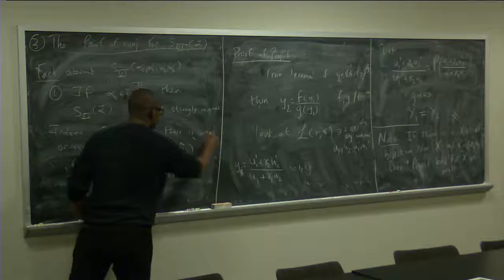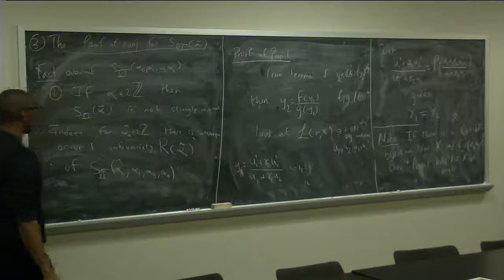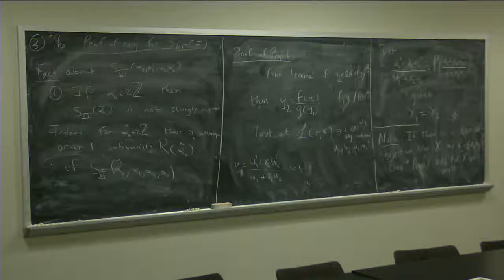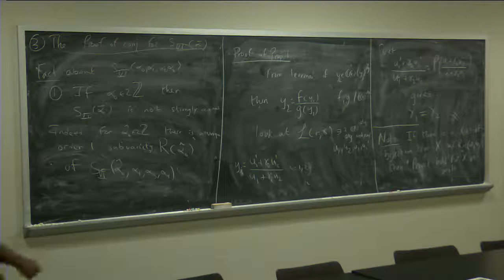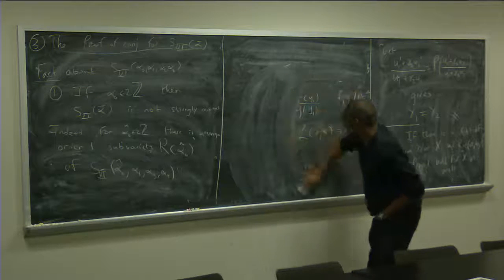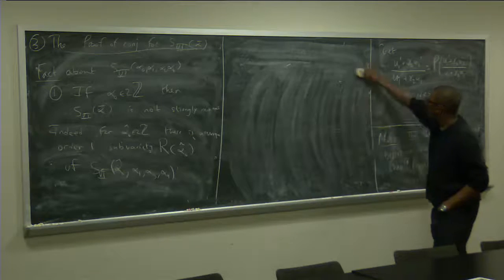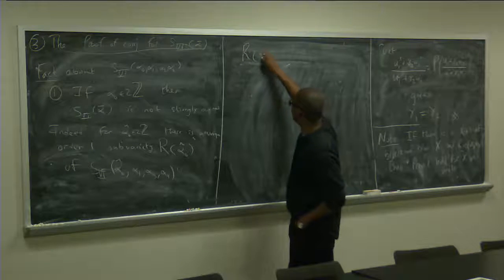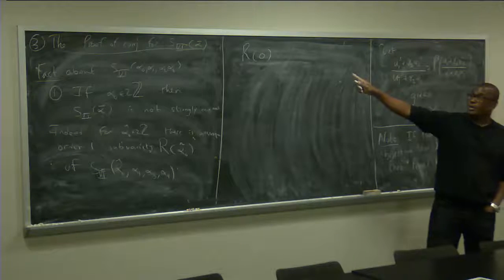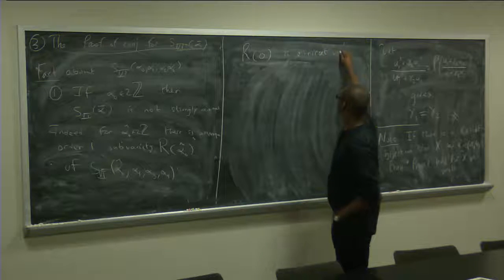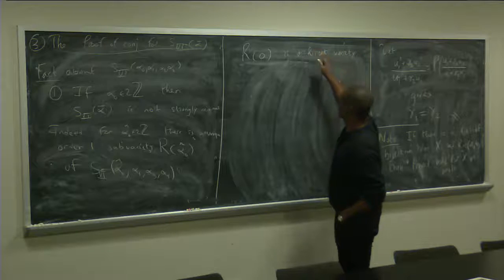All right, so, there is, let's say, a unique order 1 sub-variety, right? So, remember, if you remember, if you remember, R0 is a Riccati variety. So, R0.